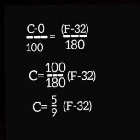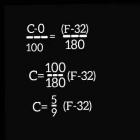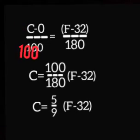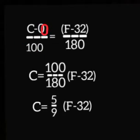Let us look at the following equation: (C minus 0) upon 100 is equal to (F minus 32) upon 180. Here C is the temperature in degrees Celsius, 100 is the upper limit in the Celsius scale — that is, the boiling point of water — and zero degrees is the freezing point of water, the lower limit.